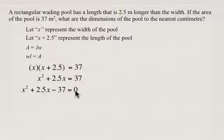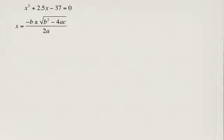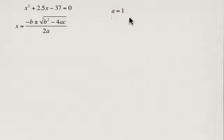This is going to be very difficult or almost impossible to factor using factoring trinomials, especially since 37 is a prime number. So we're going to use the quadratic formula: negative b plus or minus square root of b squared minus 4ac, all divided by 2a. We identify a equals 1, b equals 2.5, and c equals negative 37.